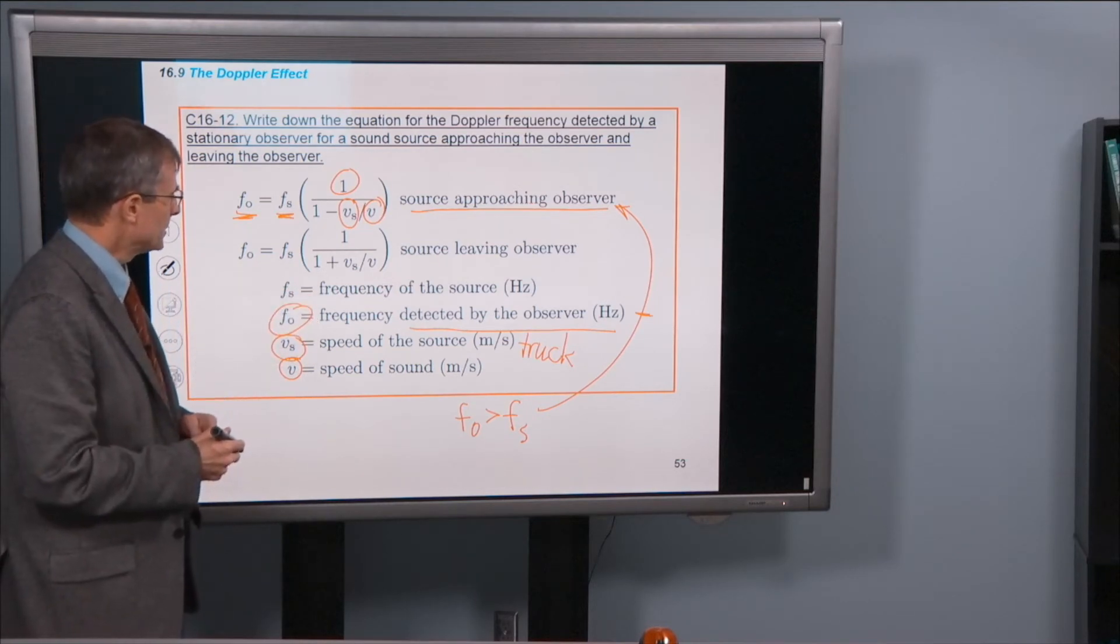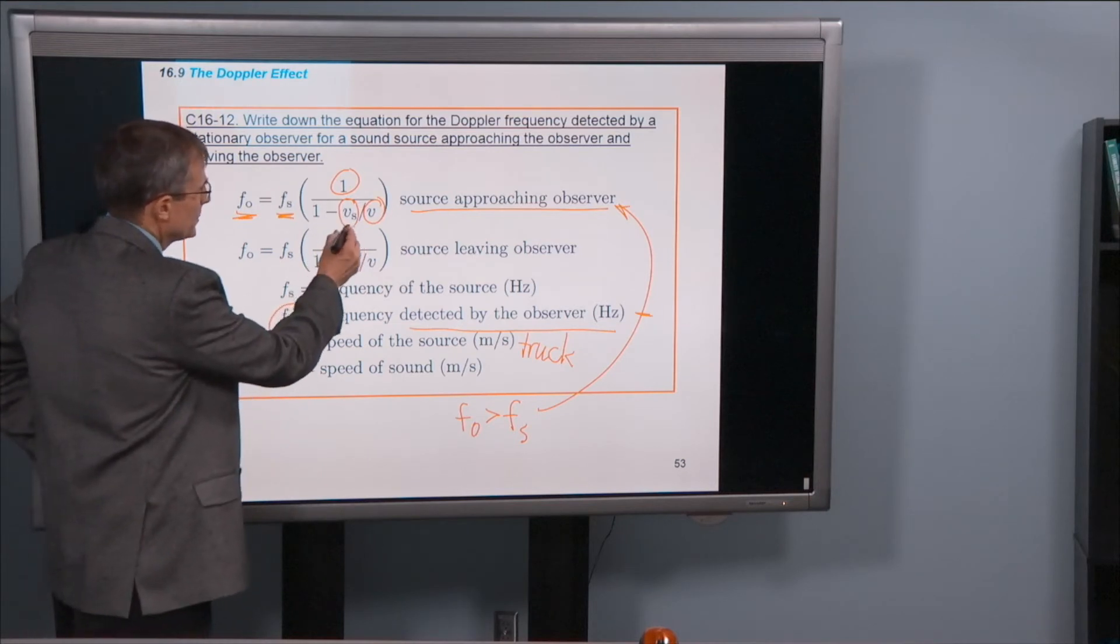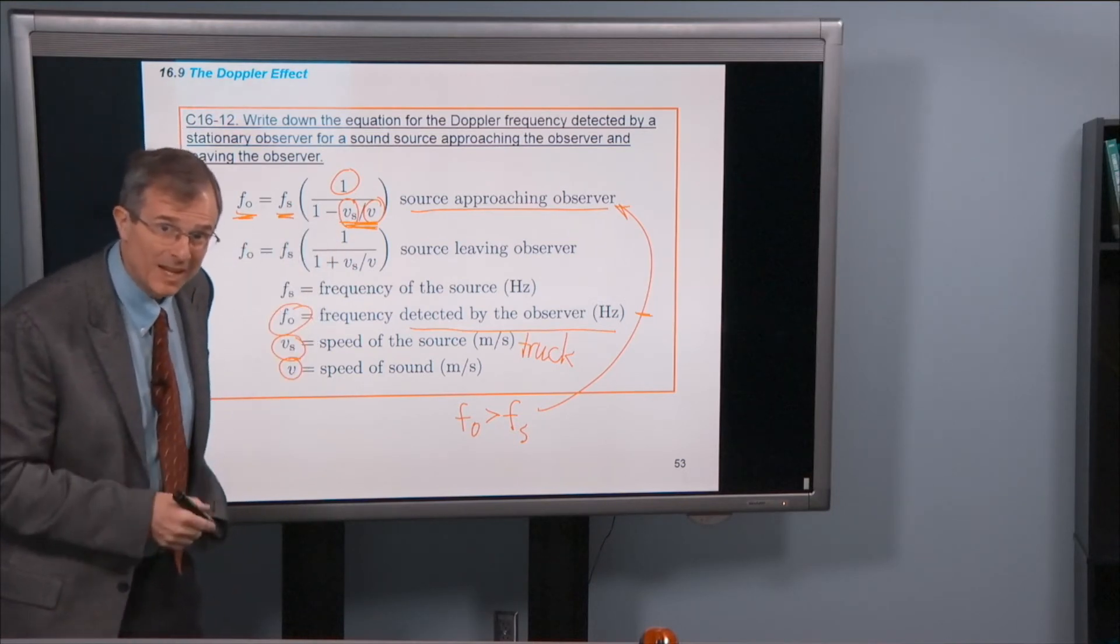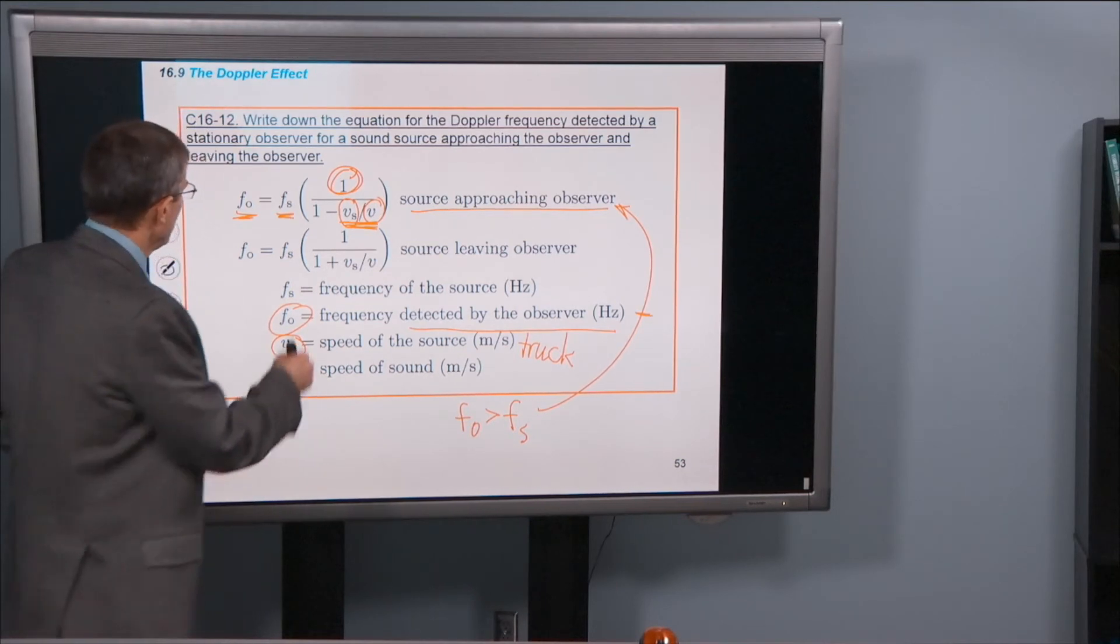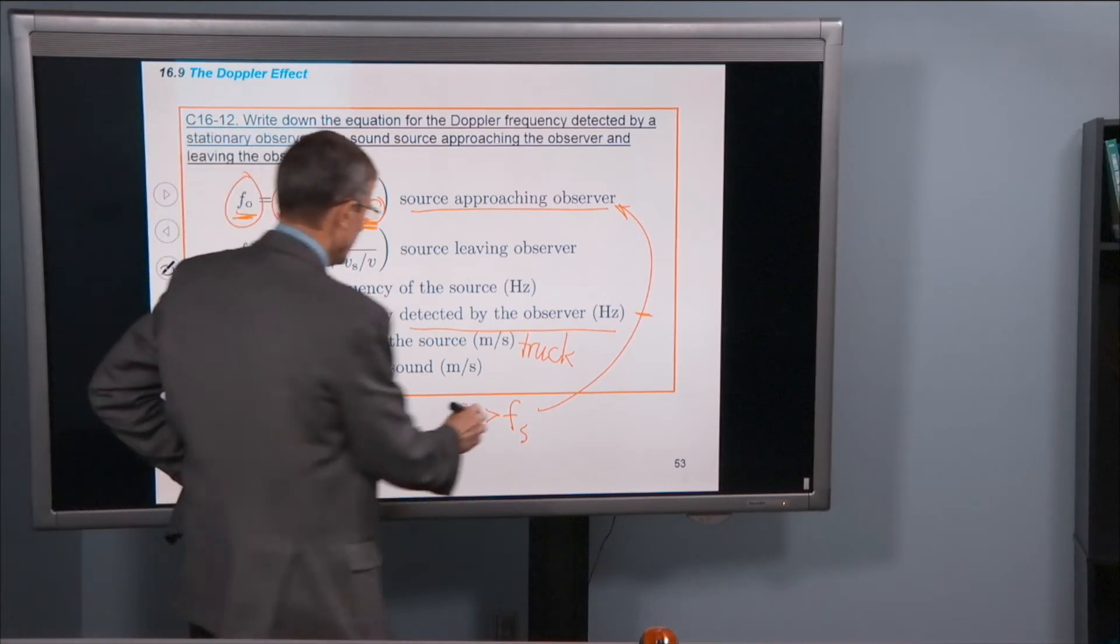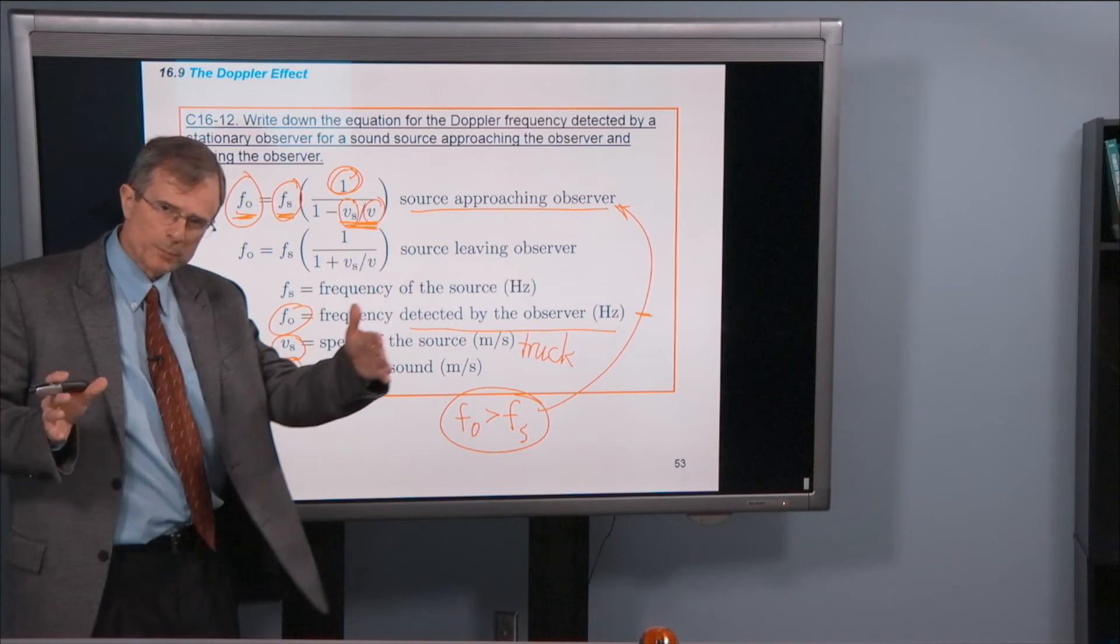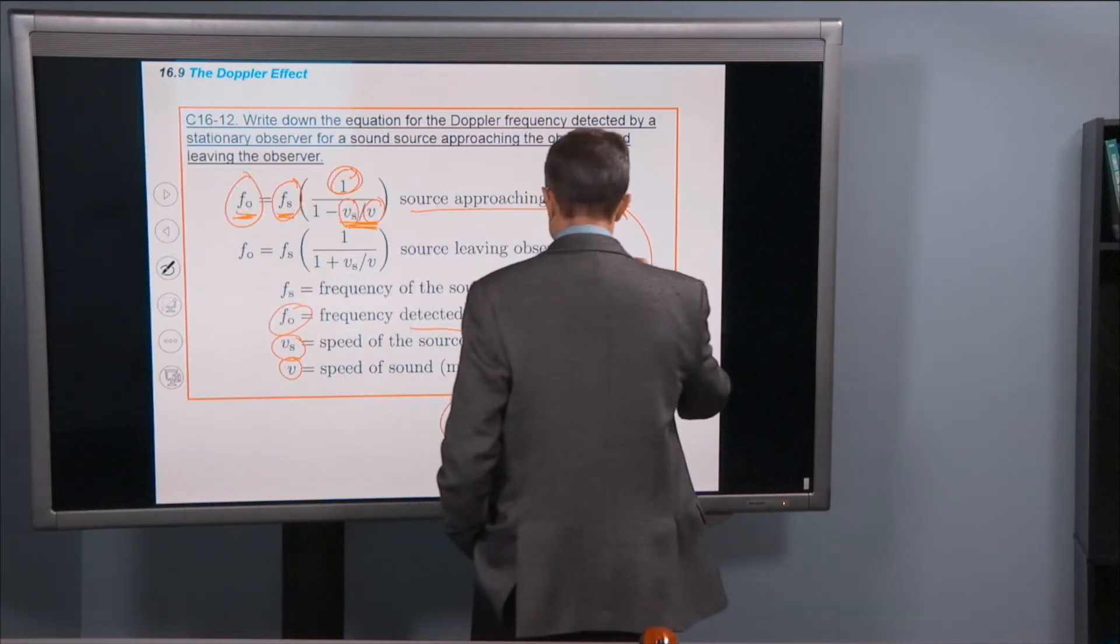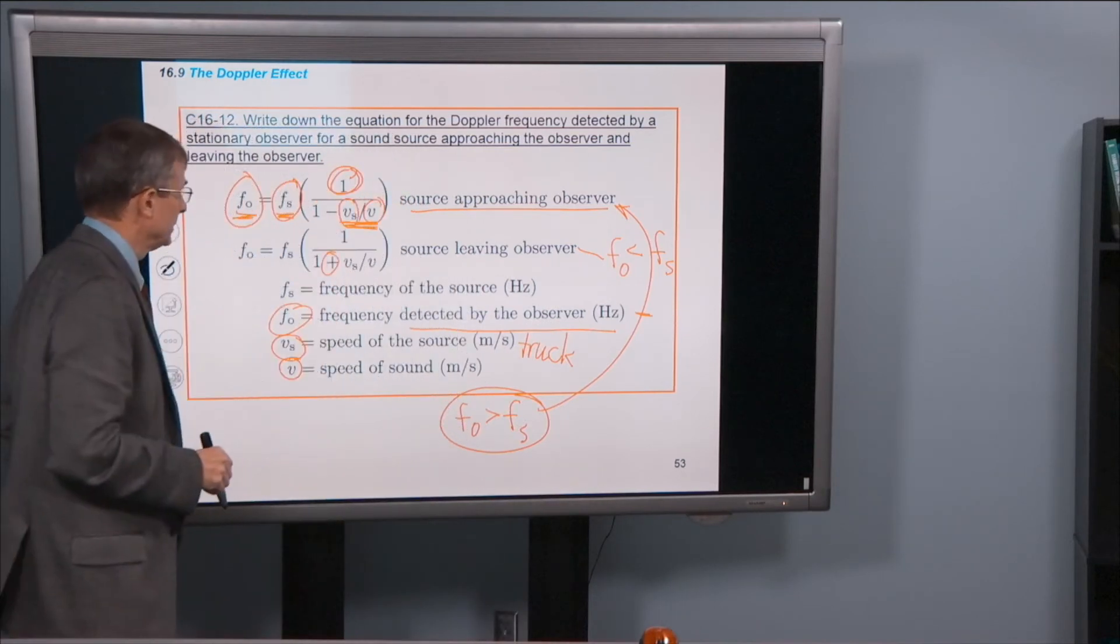But the speed of the truck will normally be less than the speed of sound. So this ratio will be less than 1, and we'll be taking 1 minus a number that's less than 1, which gives us a number that's less than 1. If you take 1 in the numerator and divide by a number that's less than 1, you get a number that's greater than 1. And if you multiply fs by a number that's greater than 1, then f0 will be greater than fs. If the source is leaving the observer, the opposite happens, and the observed frequency is actually less than the frequency of the source. That's the Doppler effect.